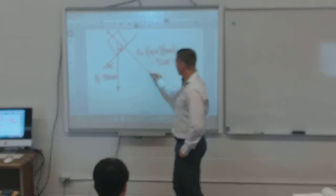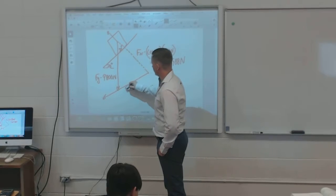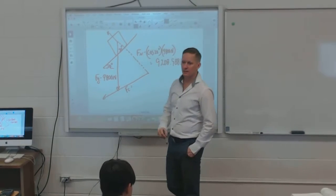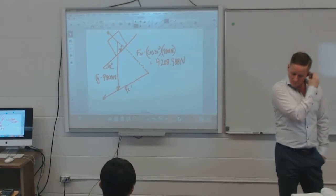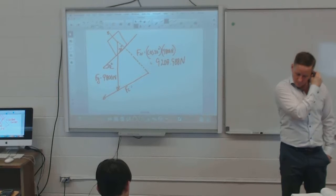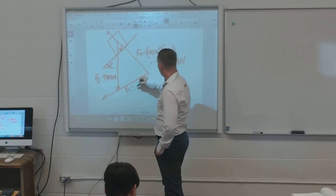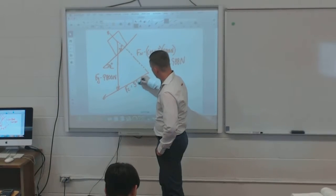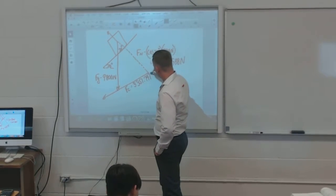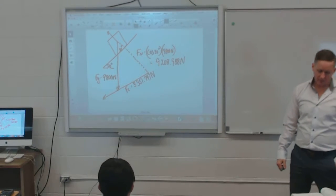Now we call this remaining force the centripetal force. How do we find it? It's sin 20° × 9,800, which equals approximately 3,351.7 N. That's what my centripetal force equals.